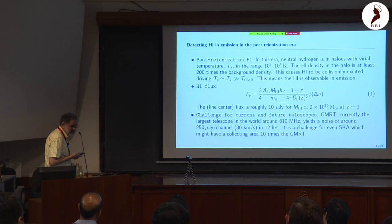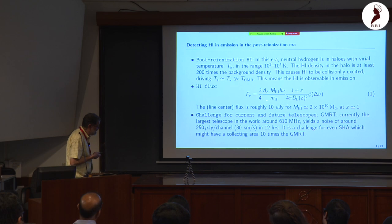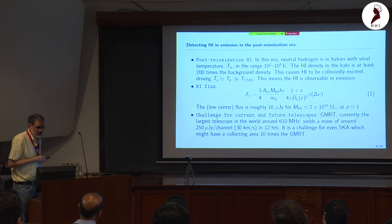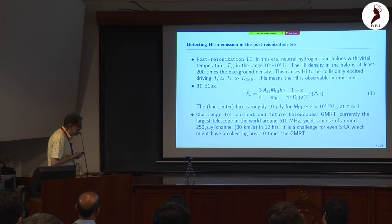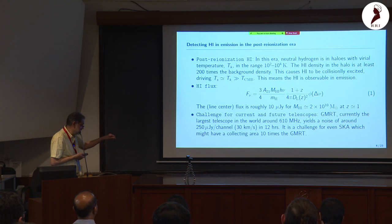The next task is determining whether we can actually detect an individual halo. This is a simple calculation: you can compute the flux at an observed frequency from a given mass. Taking a typical mass of 2.2×10^10 solar masses placed at redshift z=1, the observed flux at line center is close to 10 microJanskys. This is very weak.